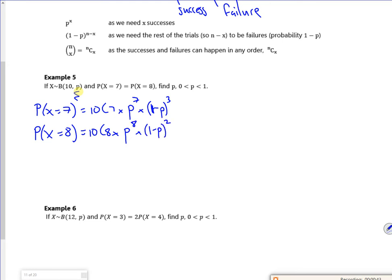So my successes are 7, failures are 3, successes are 8, failures are 2. Right then, so where have we got them?